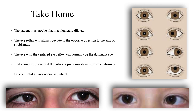In this test, it is important to remember: the patient must not be pharmacologically dilated; the eye reflex will always deviate in the opposite direction to the axis of strabismus; the eye with the centered reflex will normally be the dominant eye; and the test allows us to easily differentiate pseudostrabismus from strabismus, being very useful in uncooperative patients. Thank you very much for your attention.